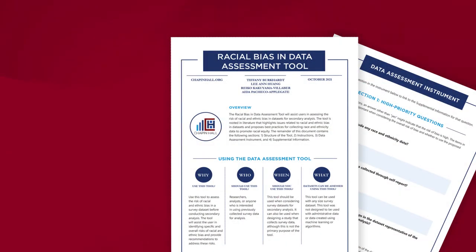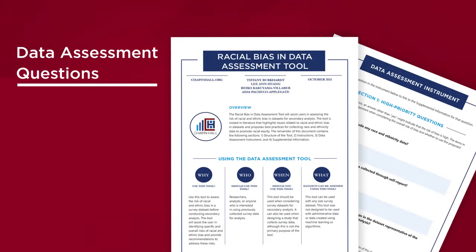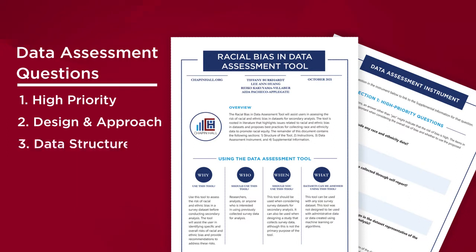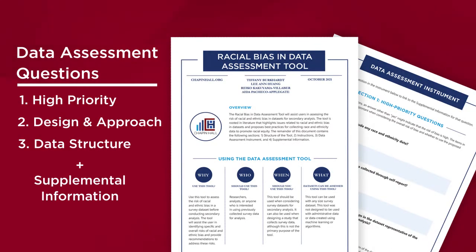The Racial Bias in Data Assessment Tool is available for use by anyone interested in assessing a survey data set for potential racial and ethnic bias. The tool has 25 questions organized into three sections: high priority questions, design and approach, and data structure, followed by supplemental information to help the user answer these questions.